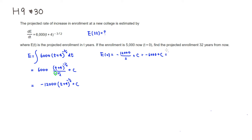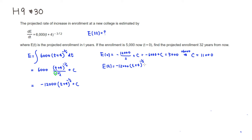This is going to be equal to 5,000, because the enrollment is 5,000. So we can find C by simply adding 6,000, so C is going to be 11,000. So E of T is found to be negative 12,000 times T plus 4 to the negative 1 half power, plus 11,000.